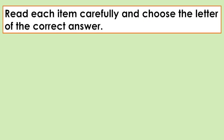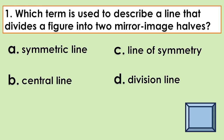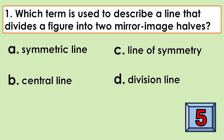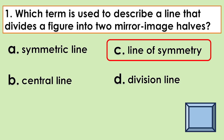Read each item carefully and choose the letter of the correct answer. You only have ten seconds to answer. Number one: which term is used to describe a line that divides a figure into two mirror image halves? The answer is letter C — line of symmetry.